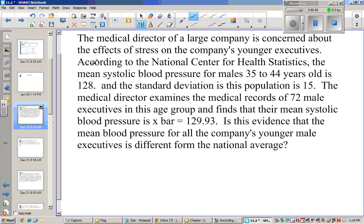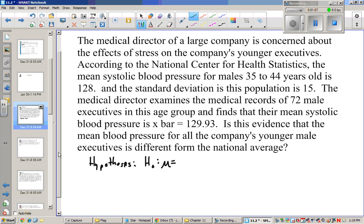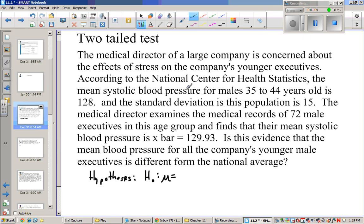Well, we'll take a look at this. The first thing we need to do is write our hypotheses. Our first one is our null hypothesis. We want to see if our μ is equal to our former μ, so the μ for the population, which is 128.